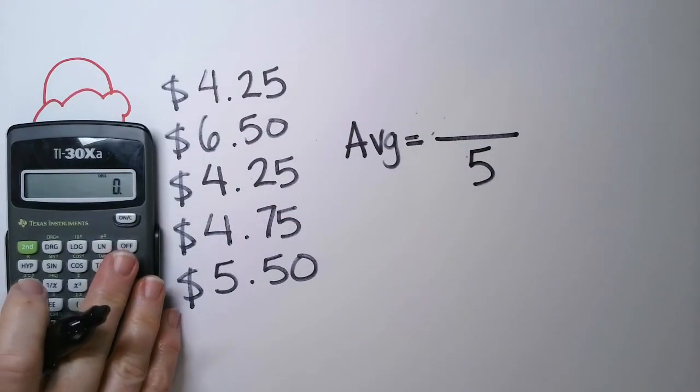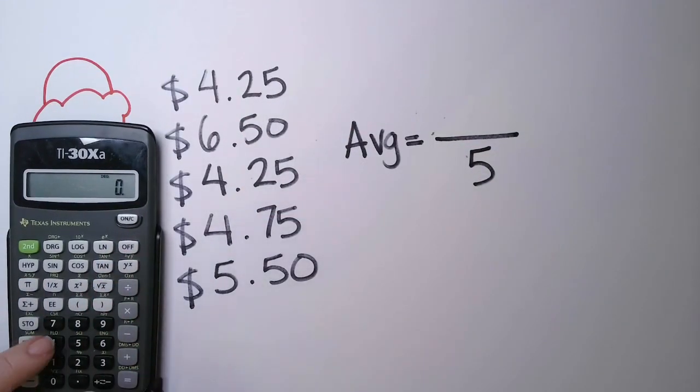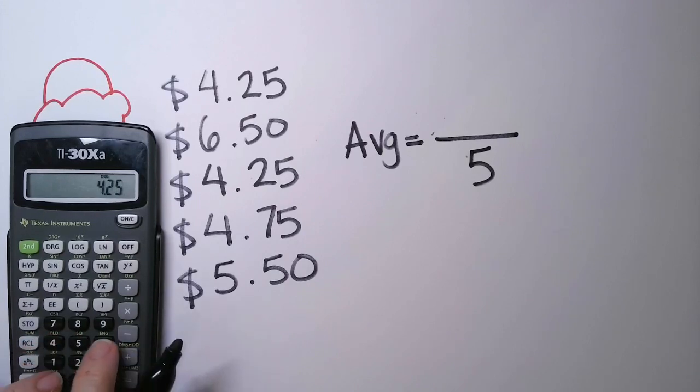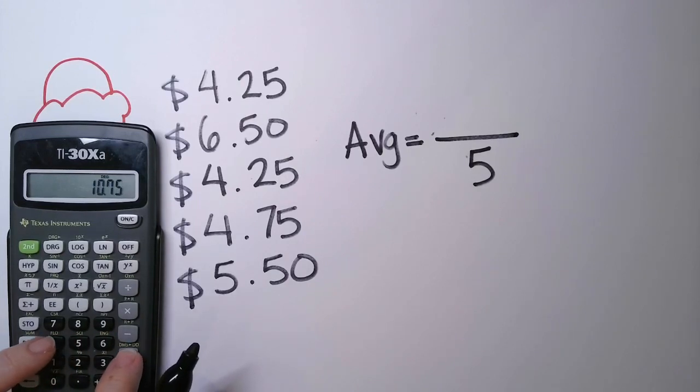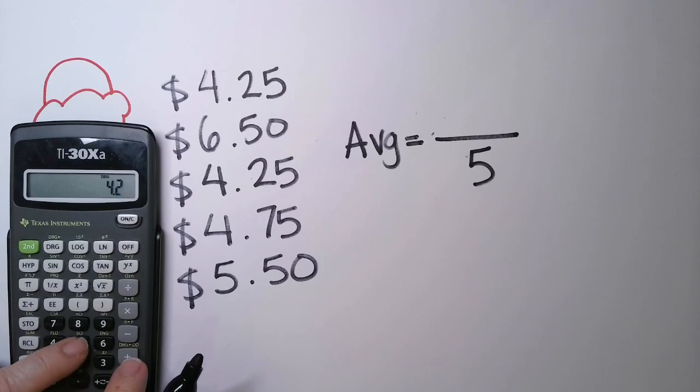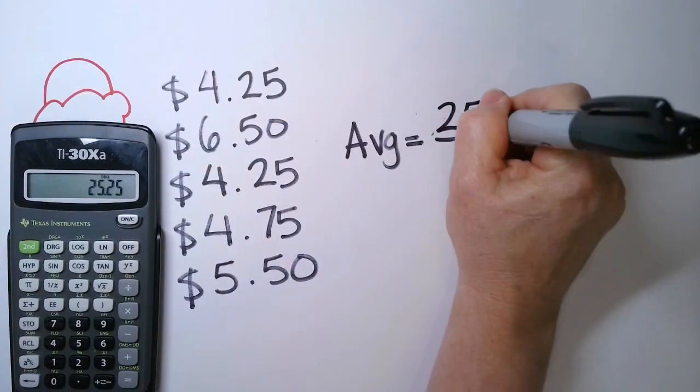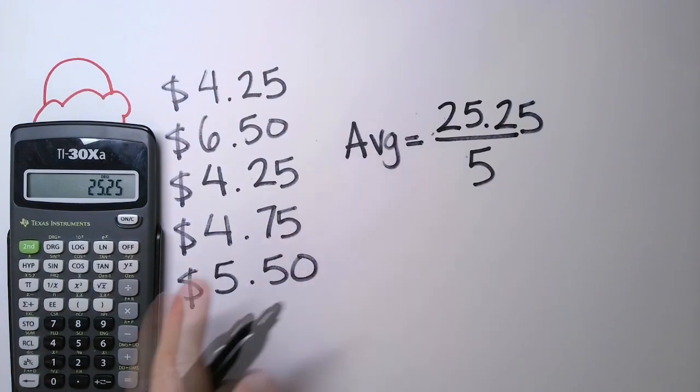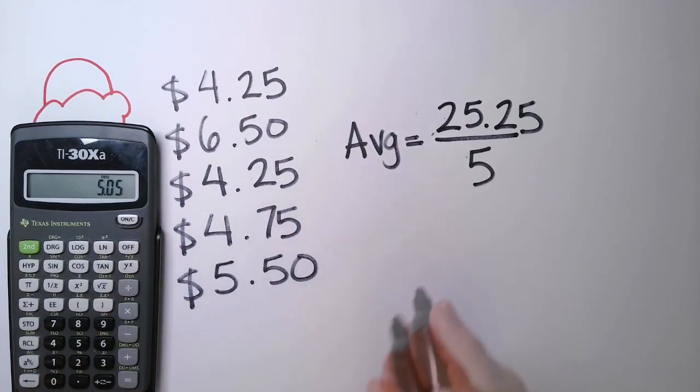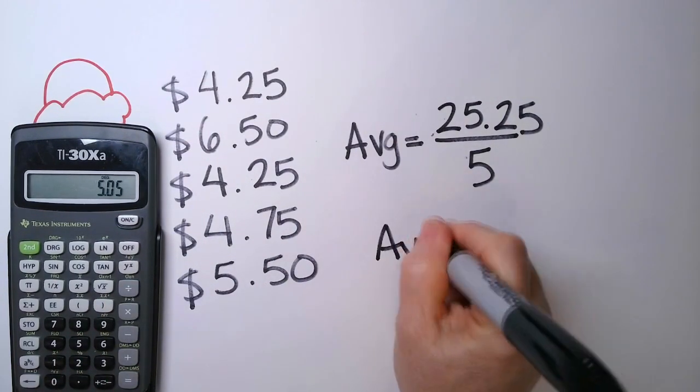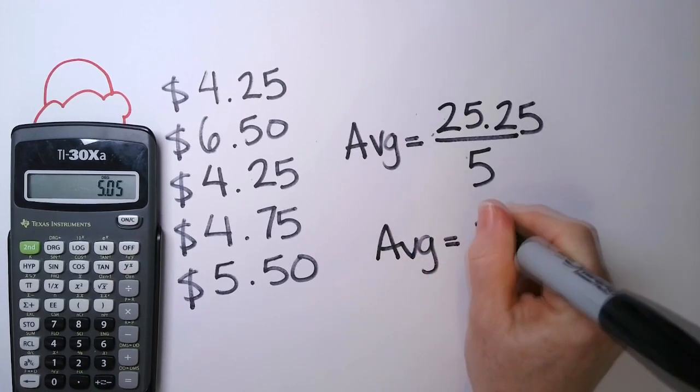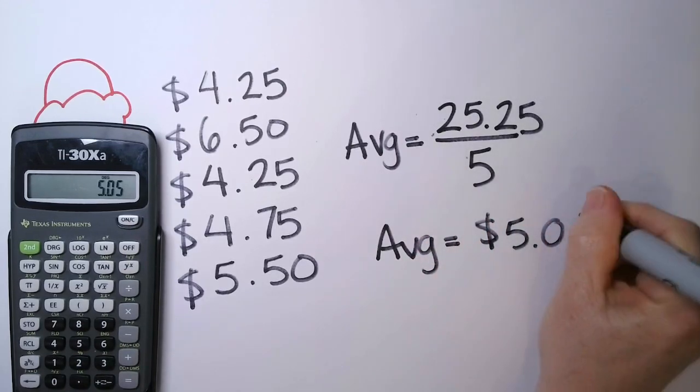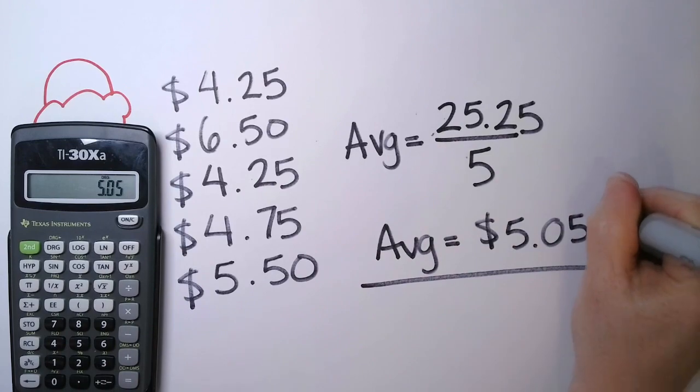And then I'm just going to use my calculator and add them up. So I have $4.25 plus $6.50 plus another $4.25 plus $4.75 plus $5.50. And that goes on the top. So $25.25. And I'm going to divide that by five. On average, people spend $5.05 when they come into your store.